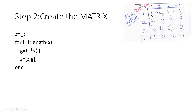Step two is very simple: you have to create this matrix. There are basically two sub-steps — first, creation of the matrix, and then add diagonally. To create the matrix, you fix h and multiply all elements of h by each element of x(n). So: z = [] (empty array), then for i = 1 : length(x), g = h .* x(i). The dot-star means element-wise multiplication.